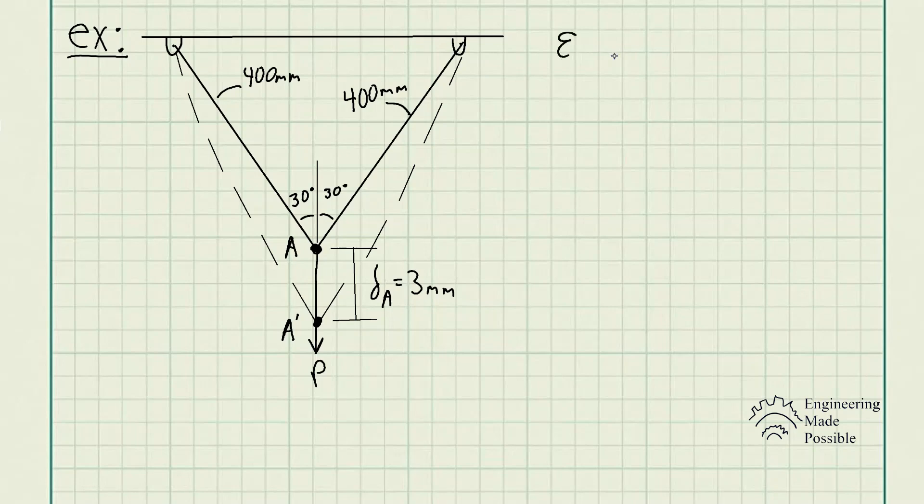We know that strain is equal to the change in length divided by the original length, or we could also write it as the final length minus the original length divided by original length.